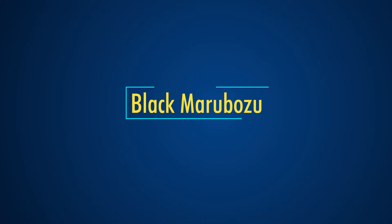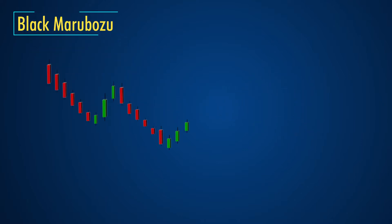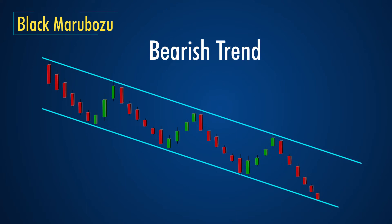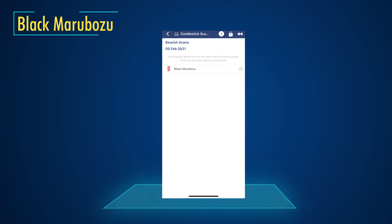In this video we will understand Black Marubozo and how to use the same in the Stockage app. A trend is known as a bearish trend when the prices move in a downward direction. Traders can identify whether the trend is bearish or not based on the bearish candles in the candlestick charts. In Stockage, we identify such trends with the help of scans like Black Marubozo.